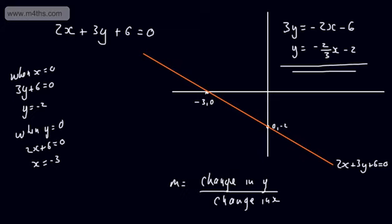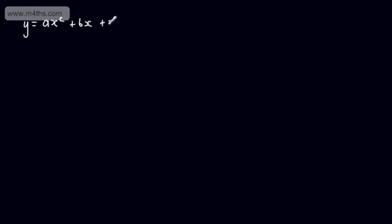These are linear equations. They're called linear because the highest power of the unknown x is just 1. What we're now going to do is look at quadratic equations. Quadratics are written in the form y = ax² + bx + c, where a, b, and c are constants and a ≠ 0. If a were 0, we'd just have bx + c, which is a straight line.